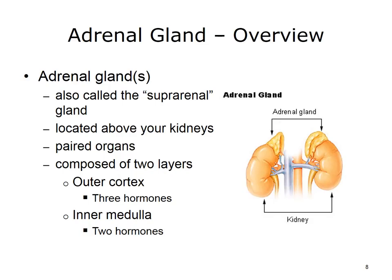An adrenal gland is located near the top of each kidney, which is why the adrenal glands are also referred to as the suprarenal glands. Each gland has two layers: an outside layer called the adrenal cortex, and the inner layer referred to as the medulla. The adrenal cortex secretes three types of hormones called corticosteroids. One helps the body regulate metabolism and glucose levels. Another hormone, aldosterone, assists the body in maintaining electrolyte balance. The last type contributes to the development of secondary sexual characteristics and is essential for reproduction.